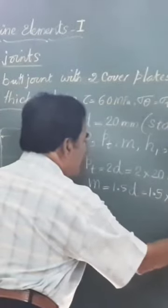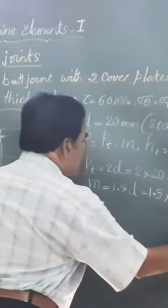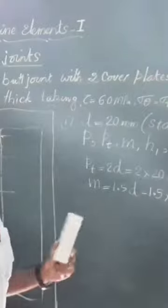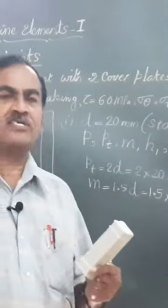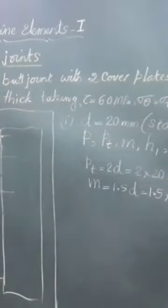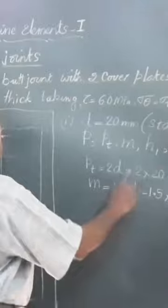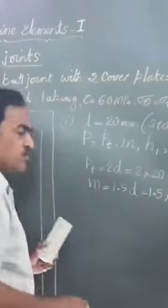So this works out to 30 mm. Finally, in these butt joints, apart from these pitchers diameter, you will have to find out what is the size of this cover plate h1 and h2.